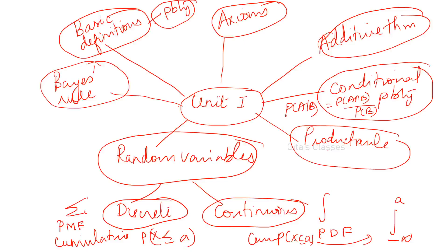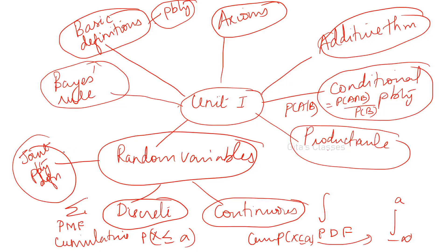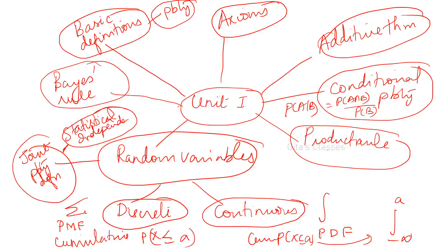The probability function or cumulative function can also be asked even for two marks. Joint probability distribution is also there — just go through those definitions. Without knowing joint probability distribution, you cannot define statistical independence, which is in your syllabus. So just go through the definitions if possible, practice them, and they will be helpful.